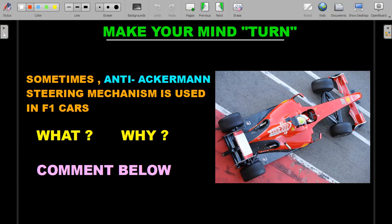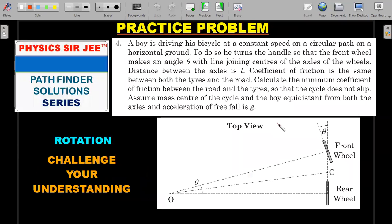The practice problem is from the Pathfinder solution series, and I'll be giving the solution after giving you sufficient time to solve this. This is from Challenge Your Understanding in Rotation chapter, question number 4. You could see a bicycle is being driven using this Ackermann steering mechanism where there is a center of rotation. The only difference is the question is slightly of higher level where he's going to talk about the minimum coefficient of friction that is required. Try this one out now. After giving you the idea of Ackermann steering, this should be a cakewalk for you.